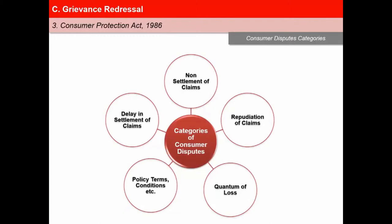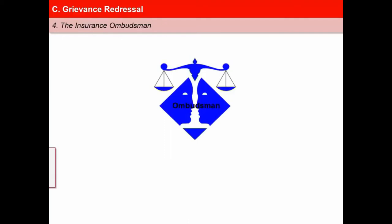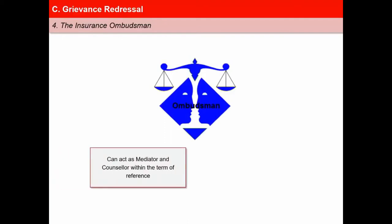The majority of consumer disputes with the three Forums fall in the following main categories: delay in the settlement of claims, non-settlement of claims, repudiation of claims, quantum of loss, and policy terms and conditions. The central government, under the powers of the Insurance Act, made redressal of public grievances rules to resolve all complaints related to settlement of claims on the part of insurance companies in a cost-effective, efficient, and impartial manner. The Ombudsman, by mutual agreement of the insured and the insurer, can act as a mediator and counselor within the terms of reference. The decision of the Ombudsman whether to accept or reject the complaint is final.